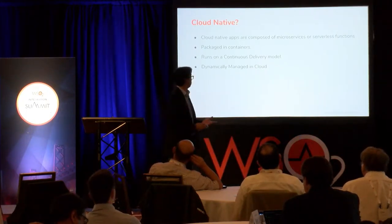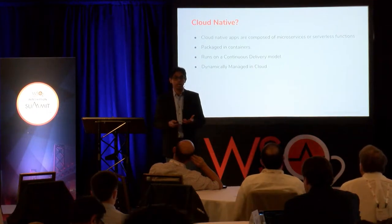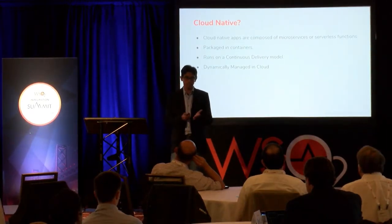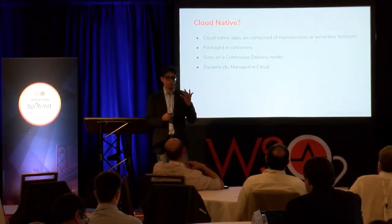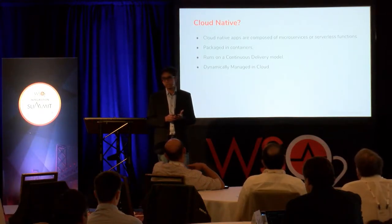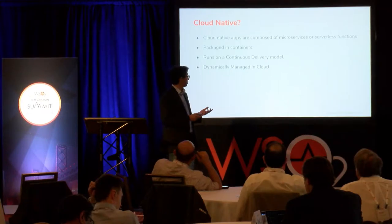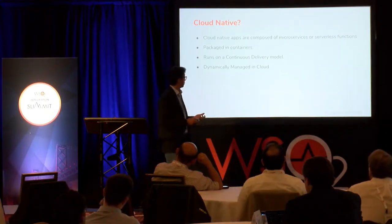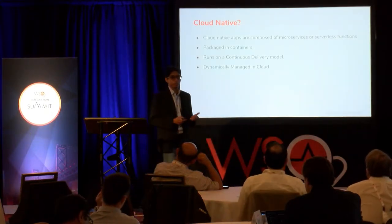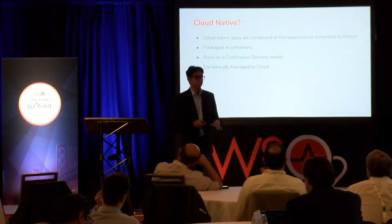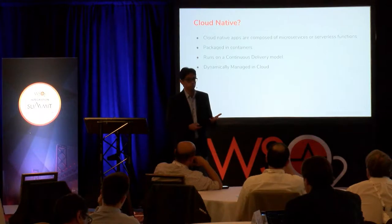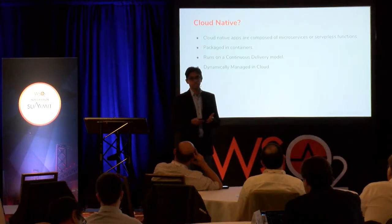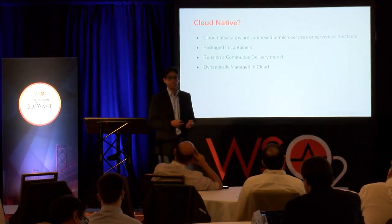When developing a cloud-native application, you model it as a combination of microservices or cloud-native functions. You identify a particular business domain and business problem, then model the application along those requirements, designing business capability-oriented services or functions. Once you do that, you package them into containers using Docker, manage them with Kubernetes as the orchestration platform, and run a CI/CD model on top.